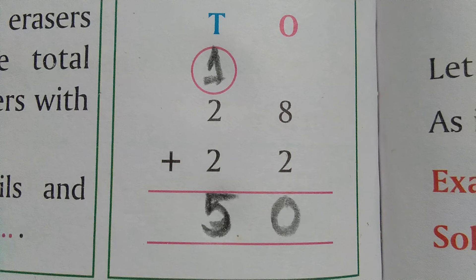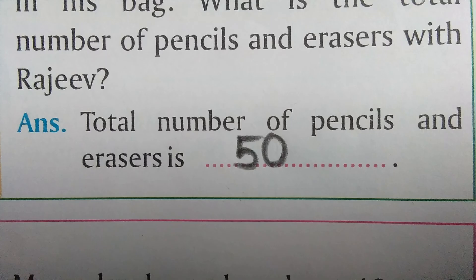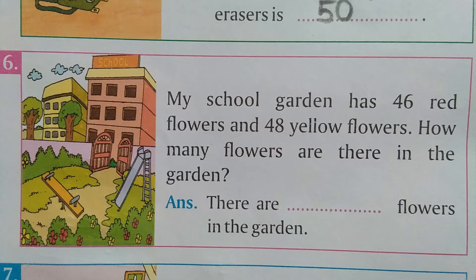Let's start the calculation from the right side, that means the ones place. 8 plus 2 is equal to 10 — we write 0 here and carry 1, written in a circle. Now 1 plus 2 plus 2 is equal to 5. So our answer is 50. The total number of pencils and erasers is 50.